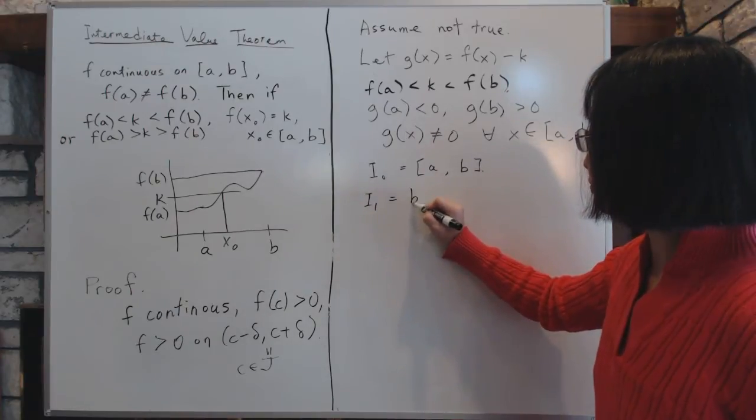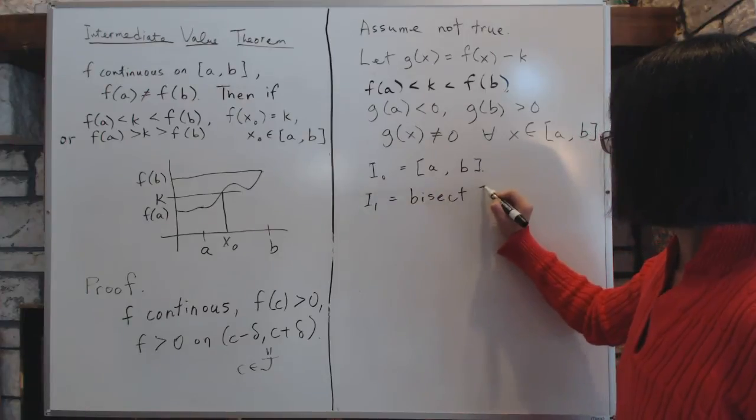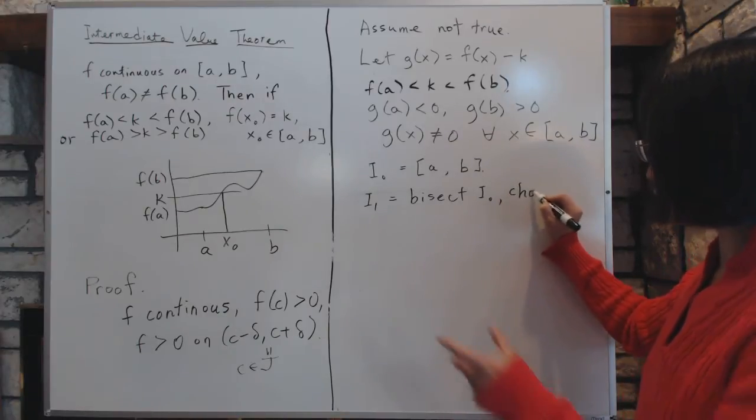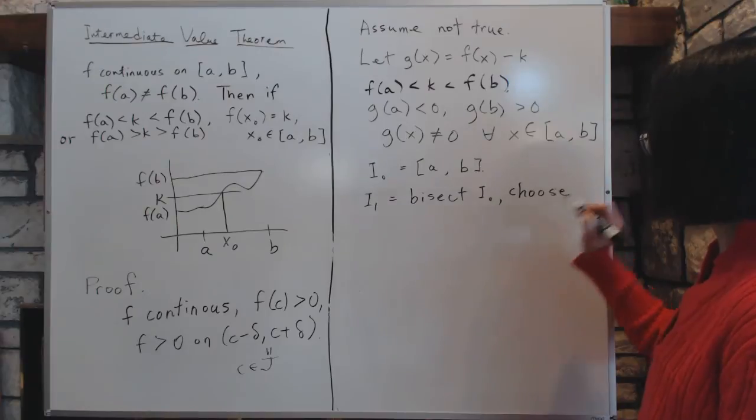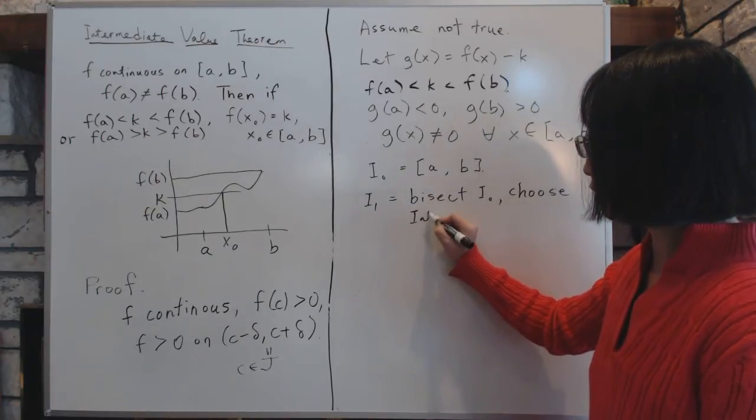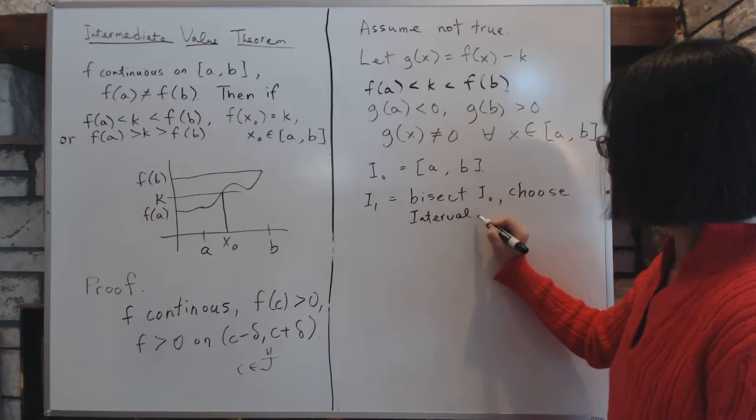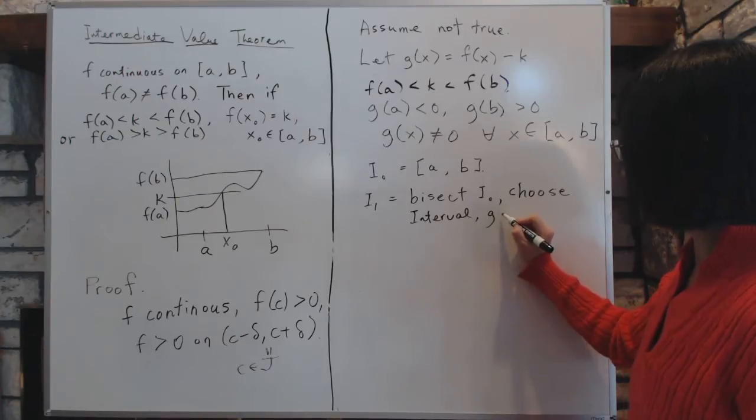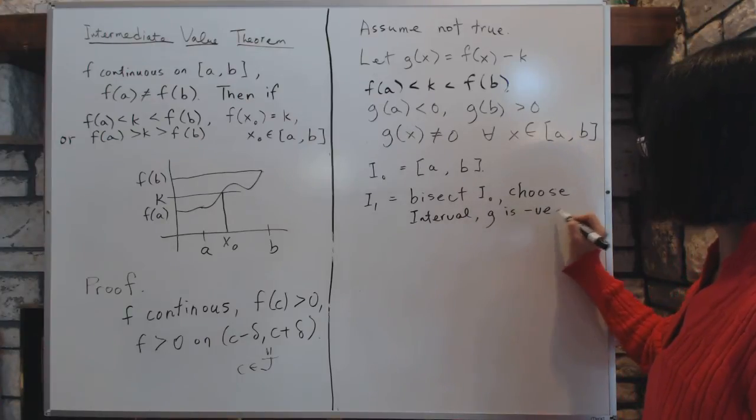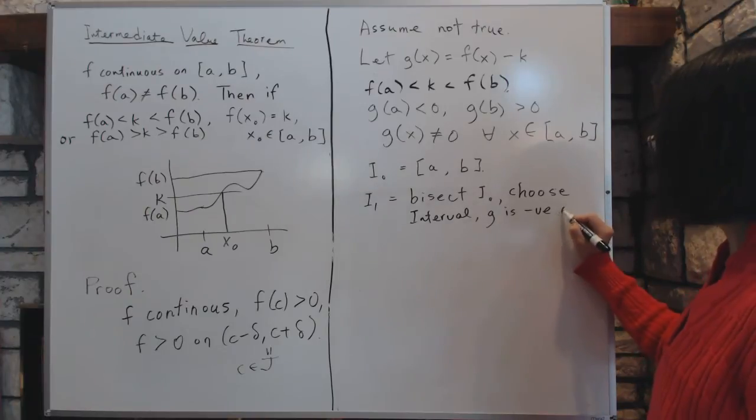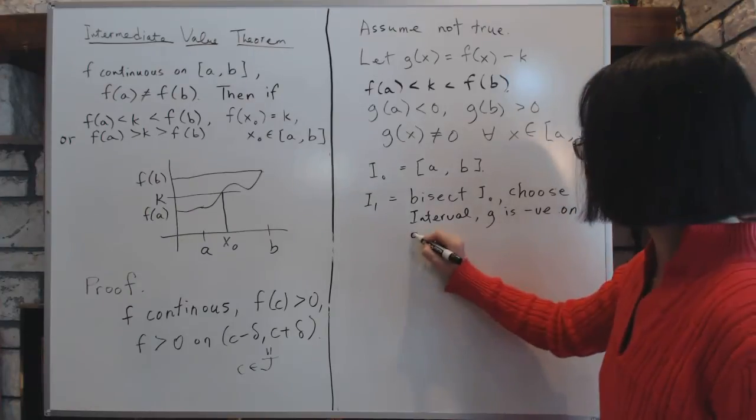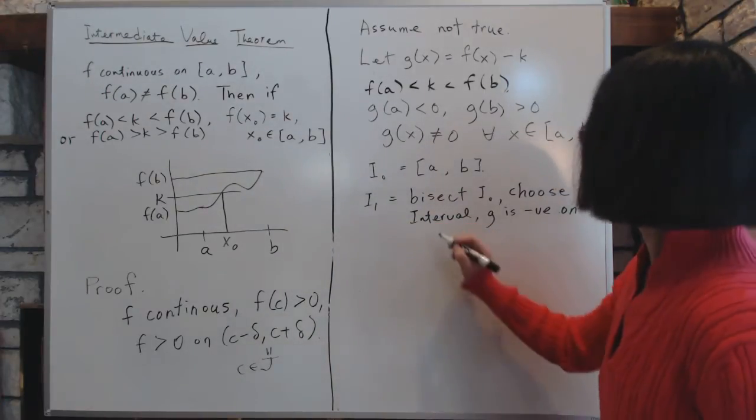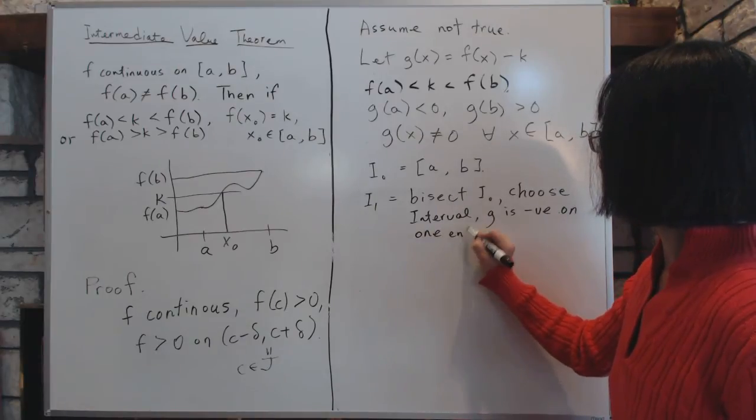And then for i1, we will bisect. i1 is, we define i1 by this way, it will bisect i0. And then choose i1 will be the, choose i1 to be the one of the two intervals where you're bisected. Choose interval where, where one end, g is, g is 0, is, g is negative on one end, and positive on the other.